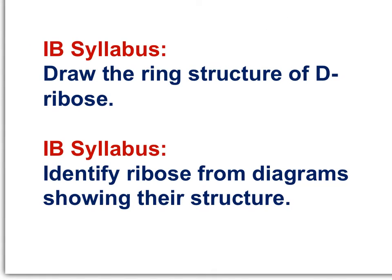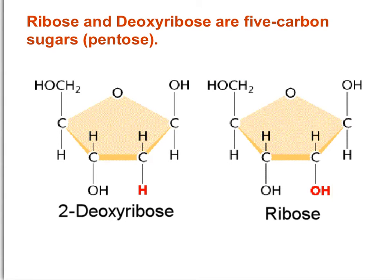Here are the next two IB syllabus statements: draw the ring structure of D-ribose, and identify ribose from diagrams showing their structure. In this diagram, you can see deoxyribose and D-ribose — the only difference is the absence of an oxygen atom on the deoxyribose molecule. The carbons of the pentose sugar are numbered 1 through 5. Carbon identification becomes important later in this course.